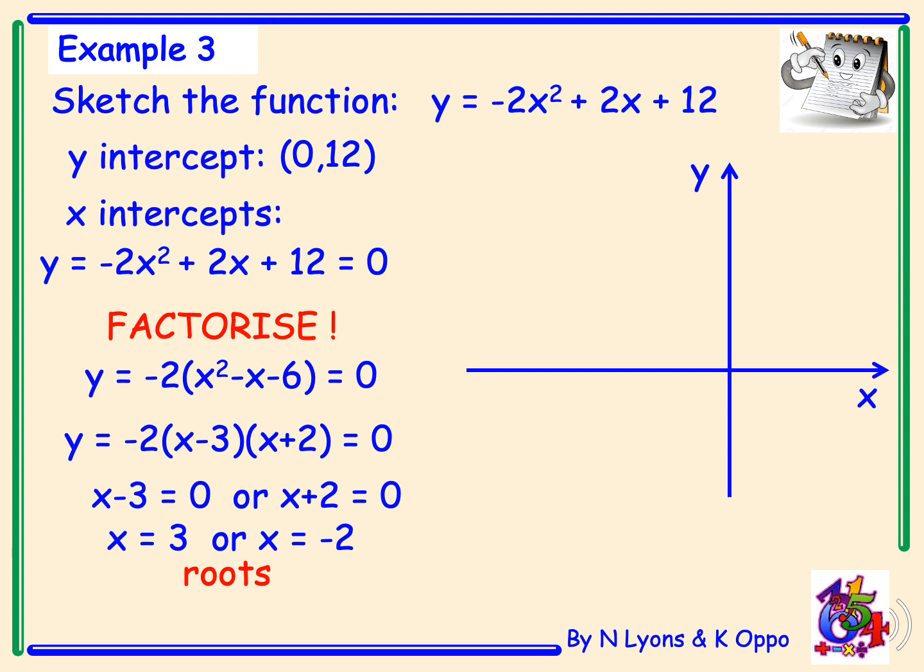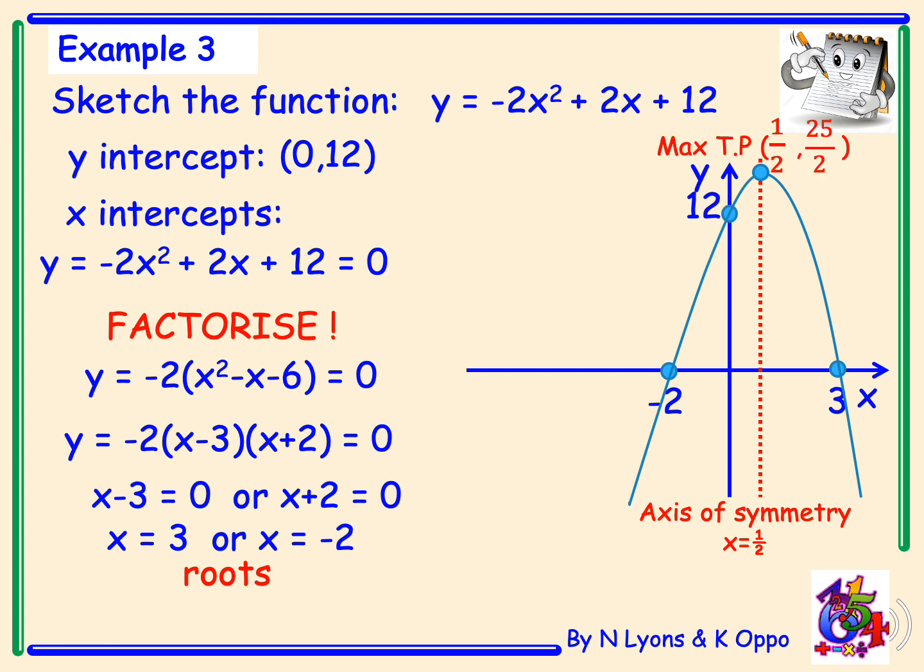So from there we can put this information on our graph, so our y-intercept of 12, and our roots of 3 and -2. Once our roots are plotted, the next thing is finding our axis of symmetry, which is directly in the middle of our two roots. And in the middle will be x = 1/2. So this is also the x-coordinate of our turning point. Now as we have a -2x², that means we have a maximum turning point if it's a negative x². And to find the y-coordinate, we're going to sub in 1/2 in place of x into our function. Therefore we have a maximum turning point at (1/2, 25/2).